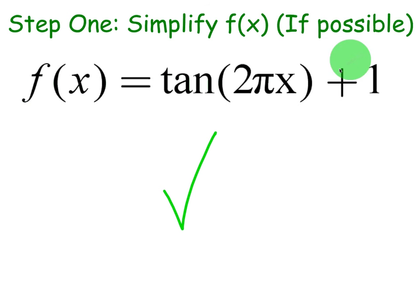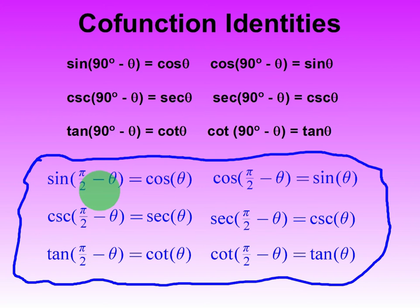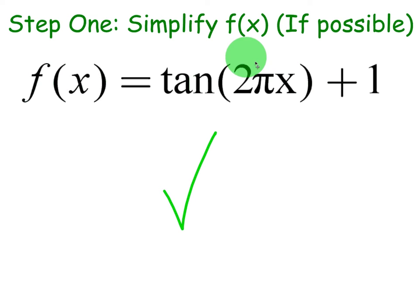Step one is to simplify f of x if possible. I can tell you right now that adding one to the function, we can't simplify that part. What about the 2 pi x part? If you recall for our identities, I don't think we have any identity that says anything about multiplying theta or x by 2 pi. Certainly not even an odd or co-function or a Pythagorean or any other identity. So for this particular example, we can't really simplify what's inside, so we're just going to leave this function as tangent of 2 pi x the quantity plus 1.